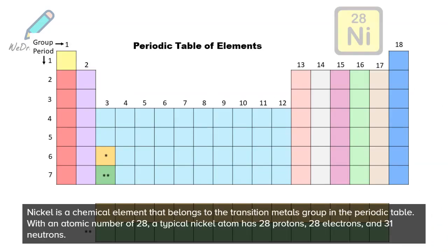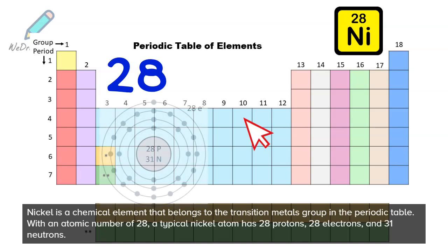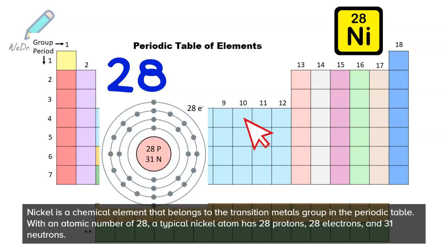Nickel is a chemical element that belongs to the transition metals group in the periodic table. With an atomic number of 28, a typical nickel atom has 28 protons, 28 electrons, and 31 neutrons.